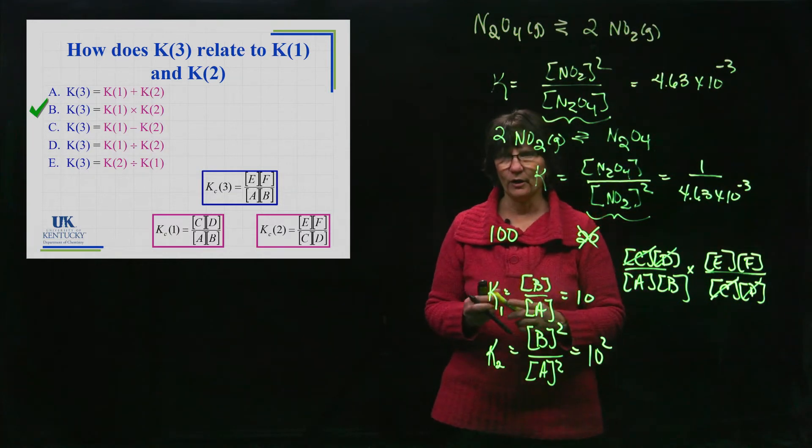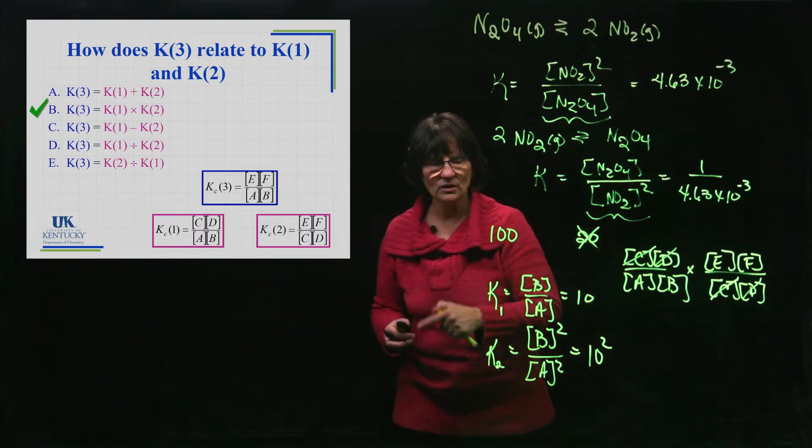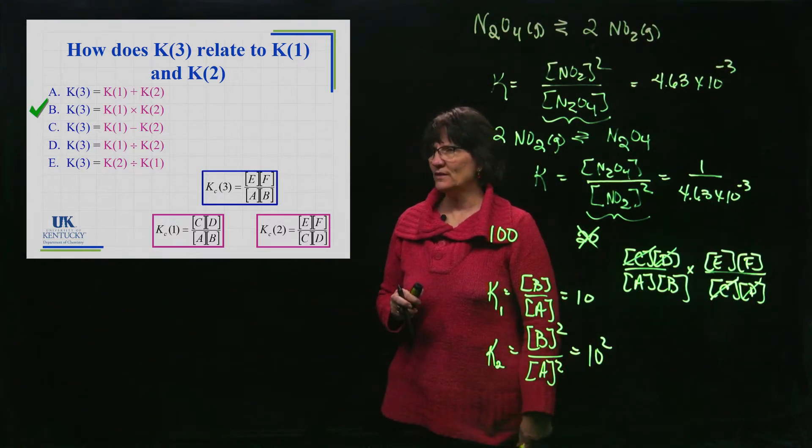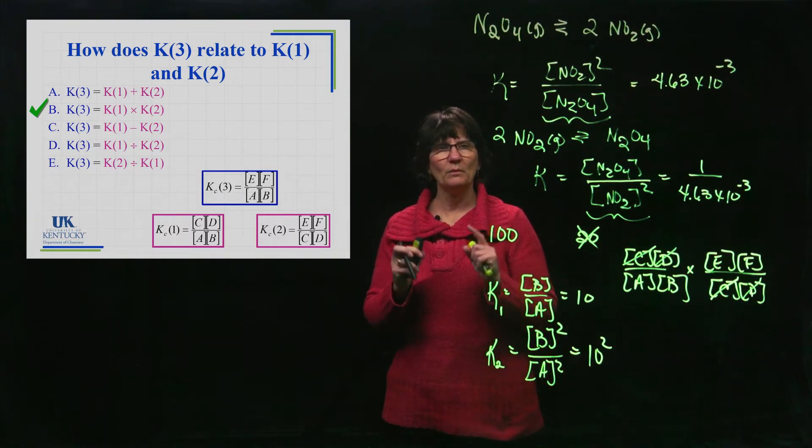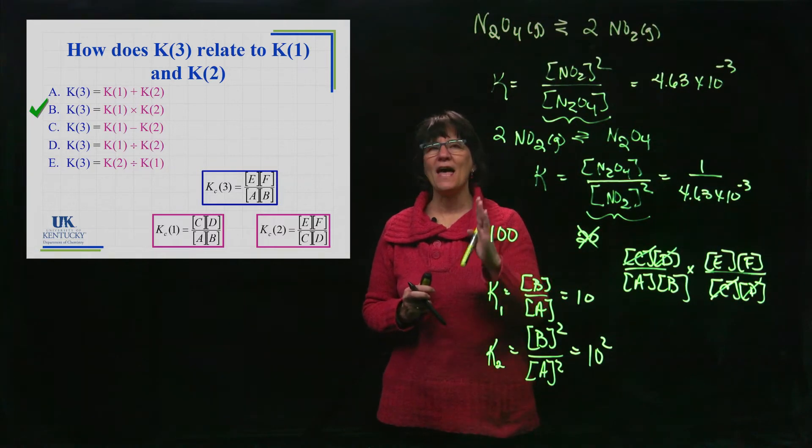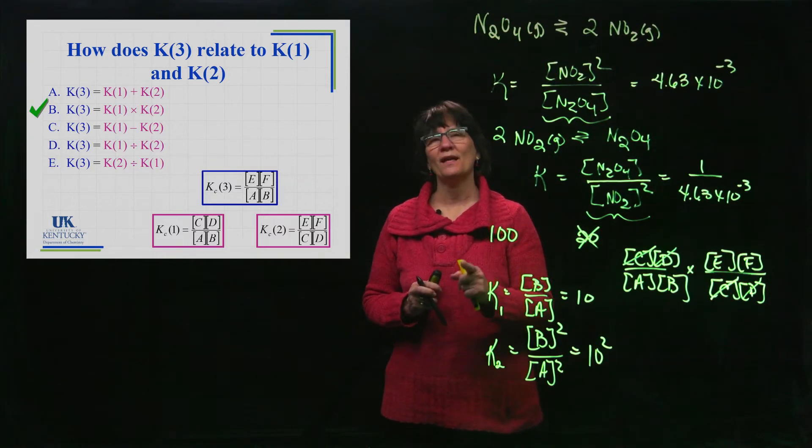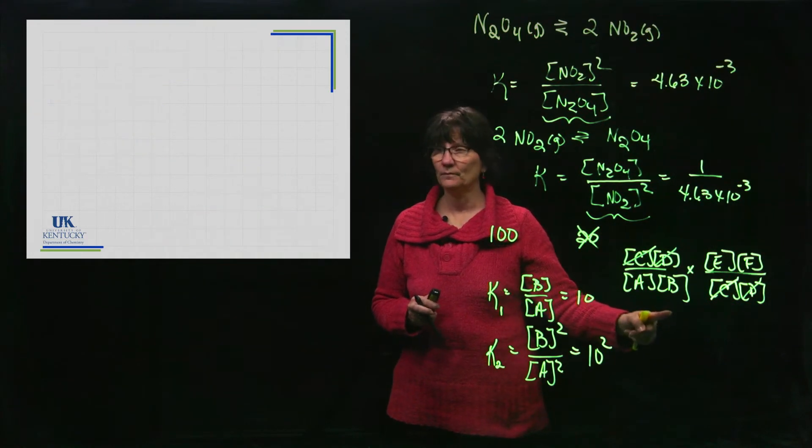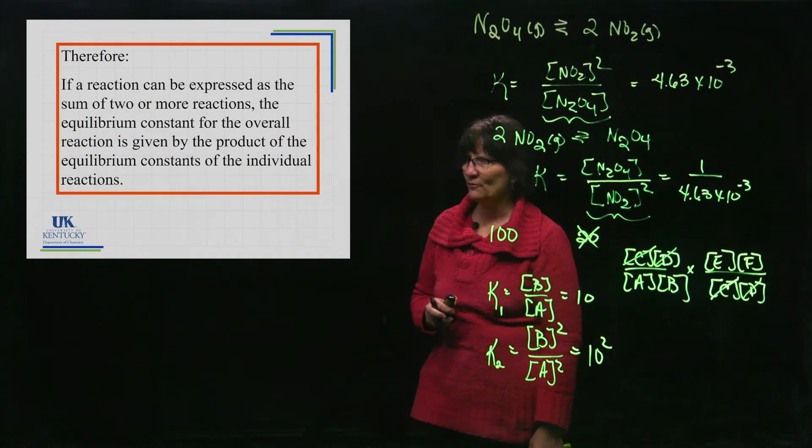So it's a multiplier. When you add equations, you multiply their K values. Students forget this all the time. But you've got to remember that the manipulations are never the same as what you did with Hess's law. With Hess's law, you added them. You're not adding here.